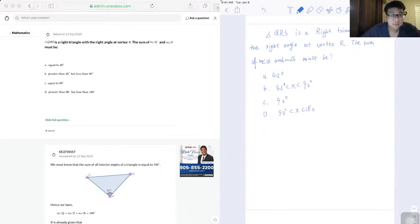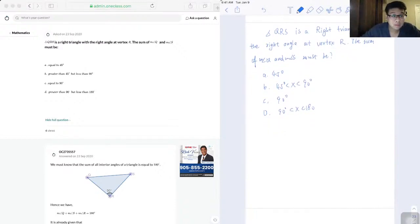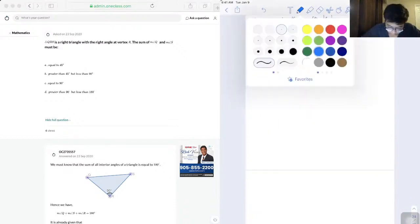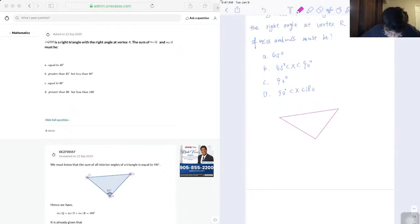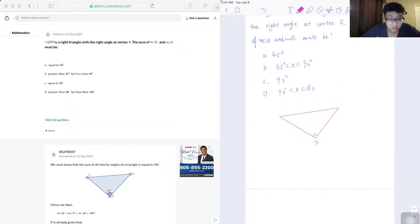So first, let's begin by drawing the graph. We know the triangle is QRS with the 90-degree angle at R. So that's what my triangle looks like.